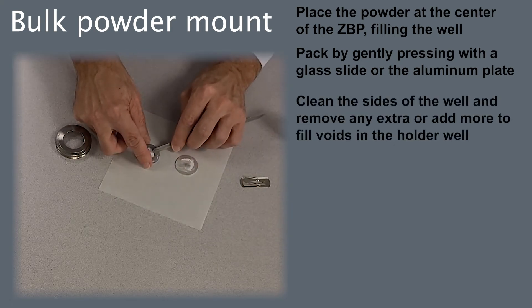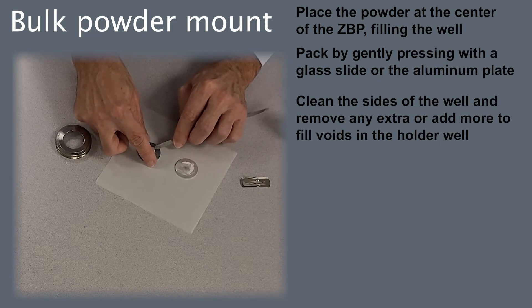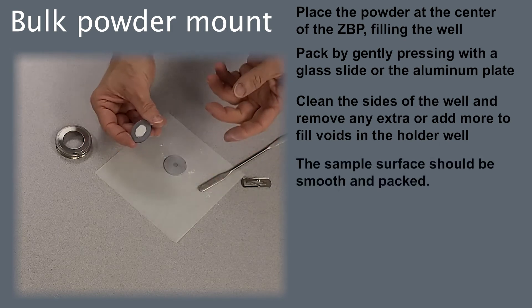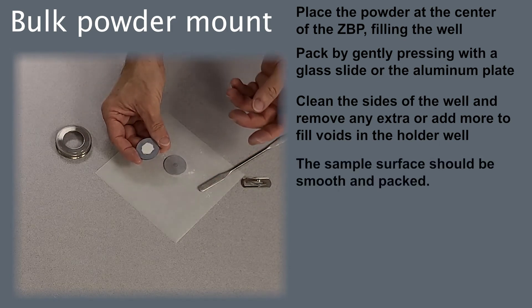Clean the sides around the well. You can add extra powder if there are voids. The sample surface should be smooth and packed.